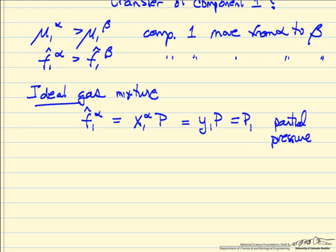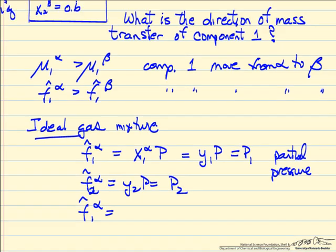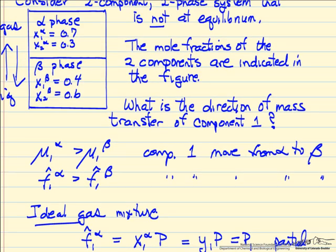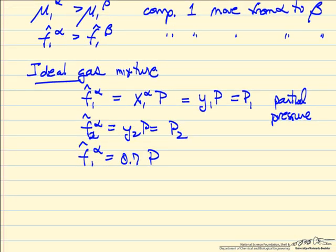So for an ideal gas, the fugacity of a given component equals its partial pressure. Component two in the alpha phase is y₂ times P. For our specific system, the fugacity of component one in the alpha vapor phase would be 0.27 times the total pressure. Notice that the units of fugacity are the units of pressure.